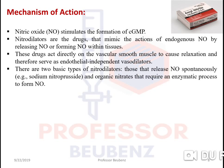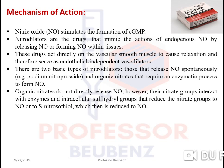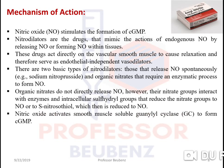There are two basic types of nitrodilators: those that release nitric oxide spontaneously — example is sodium nitroprusside (this is a GPAT question asked in previous years) — and organic nitrates that require an enzymatic process to form nitric oxide. Organic nitrates do not directly release nitric oxide; however, their nitrate group interacts with an enzyme and intracellular sulfhydryl groups that reduce the nitrate group to nitric oxide or form S-nitrosothiol, which is then reduced to nitric oxide.